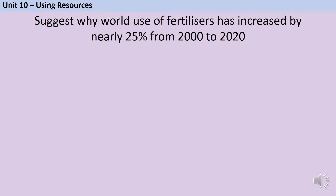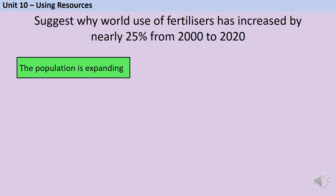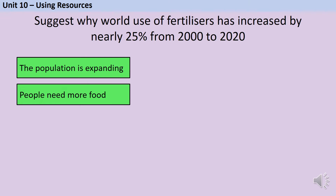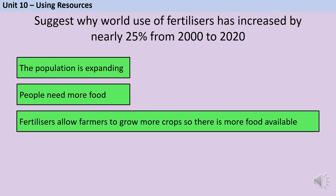You could be asked to demonstrate that you know what a fertiliser is by suggesting why world use of fertilisers has increased by nearly 25% from the turn of the millennium to 2020. Since the millennium, the population has expanded from about 6.1 billion to nearly 7.8 billion people. That's a lot more mouths to feed, so we need a lot more food. Fertilisers allow farmers to grow more crops and have higher yields, so there is more food available.